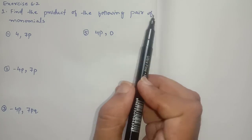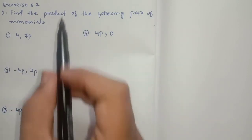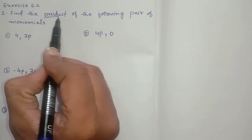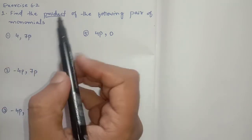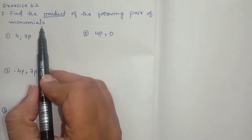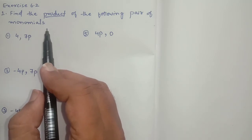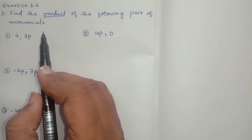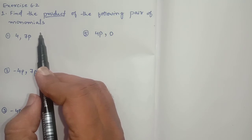Find the product of the following pair of monomials. We have to find product. As you know, product means multiplication. Product of two numbers means you have to multiply the two numbers. Product of two variables means you have to multiply the two variables.